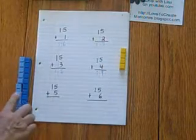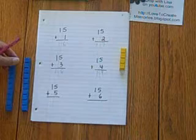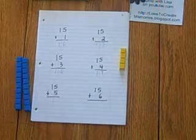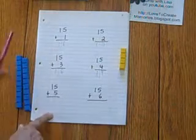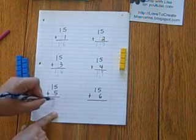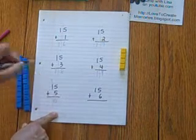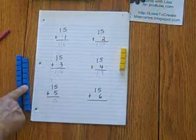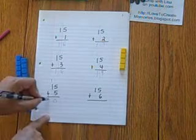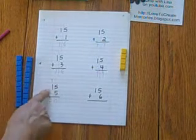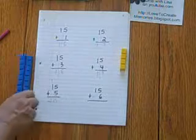We're going to swap out the 5 plus 5 for 10. So the 0 goes here and the 1 goes here. 1 plus 1 is 2. 15 plus 5 equals 20.